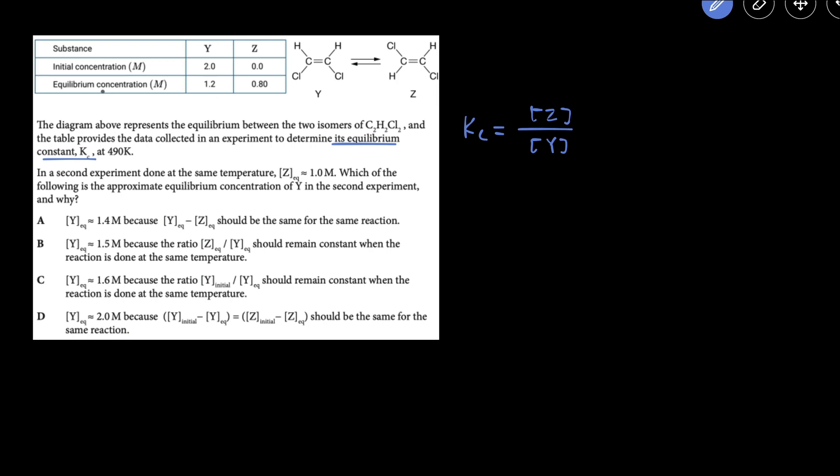We know that when the first experiment was done these are the equilibrium concentrations. So we can plug it in and get the K value. So that would be 0.8 because Z is 0.8 and Y's equilibrium concentration is 1.2. So 0.8 divided by 1.2, that's approximately 2 thirds which is approximately 0.667.